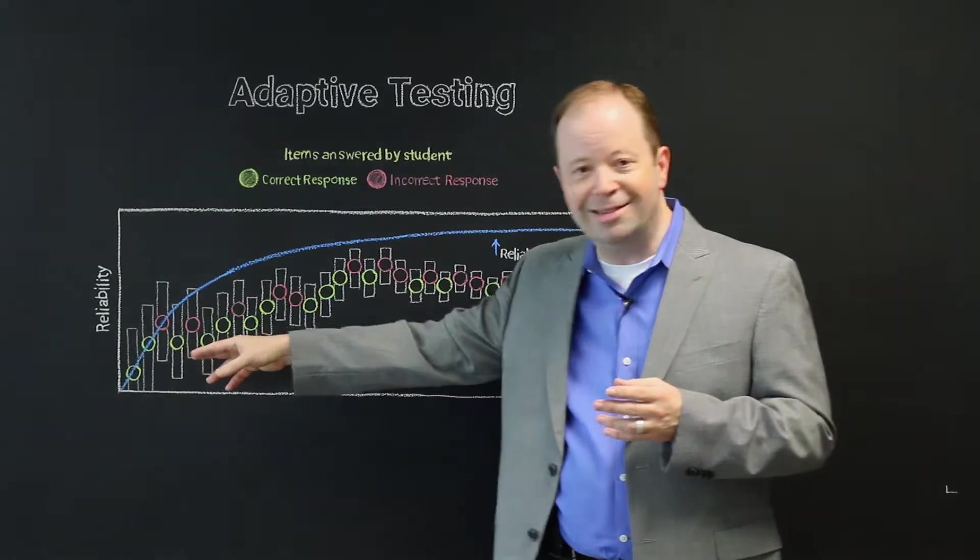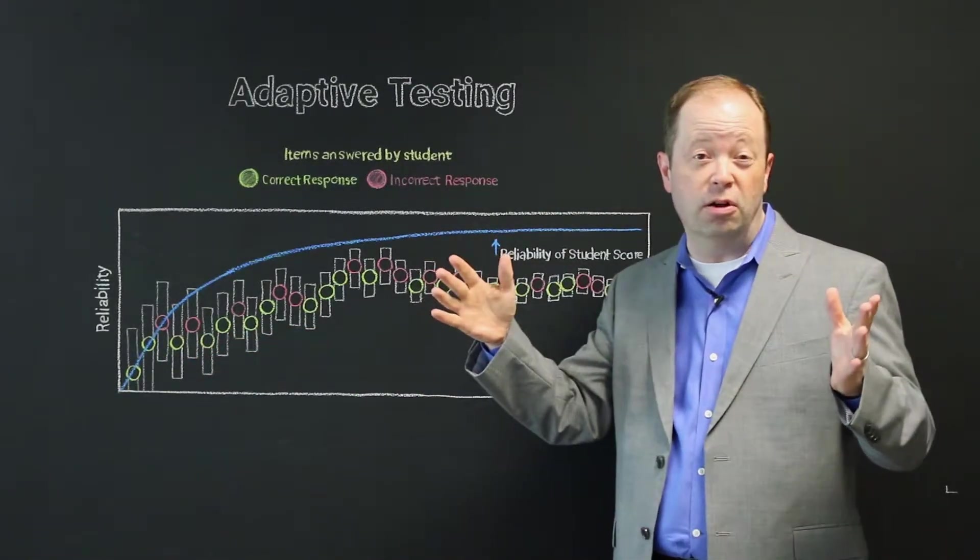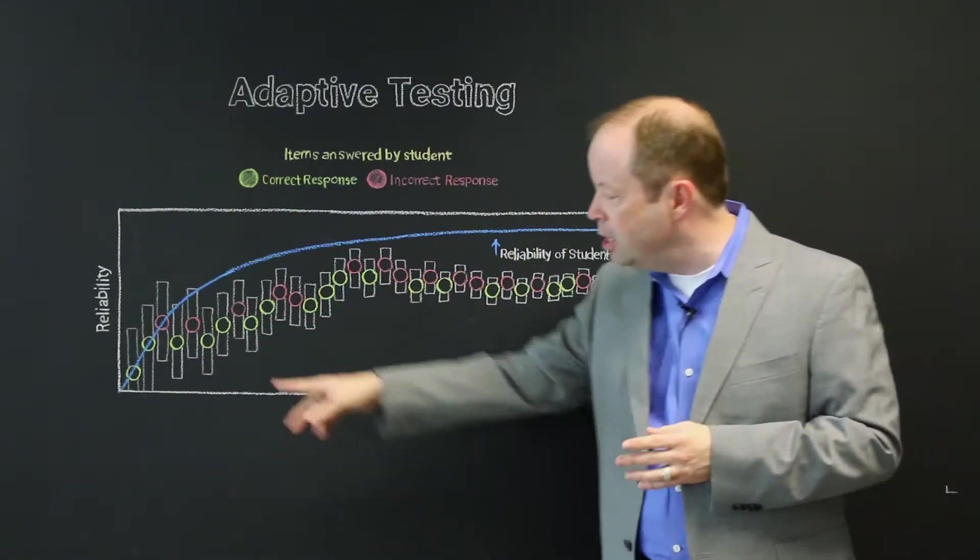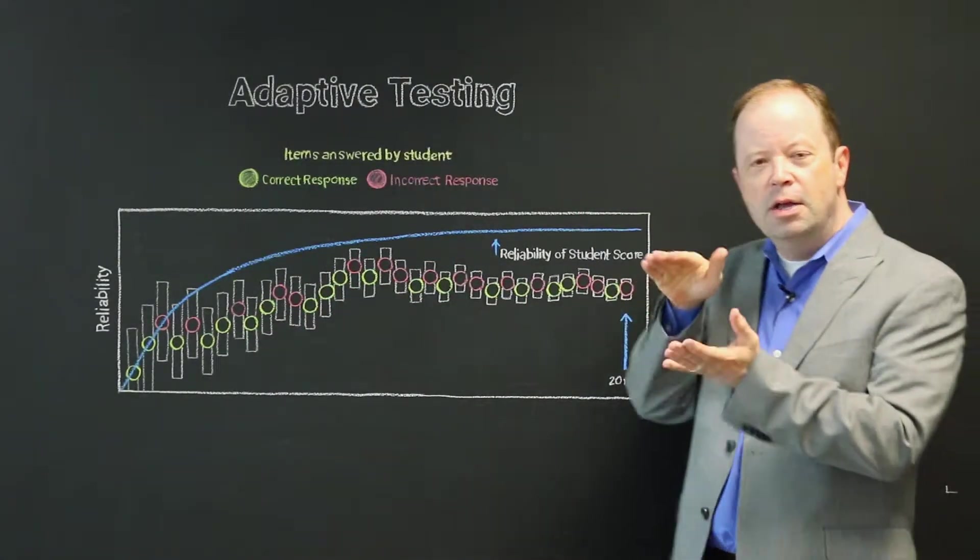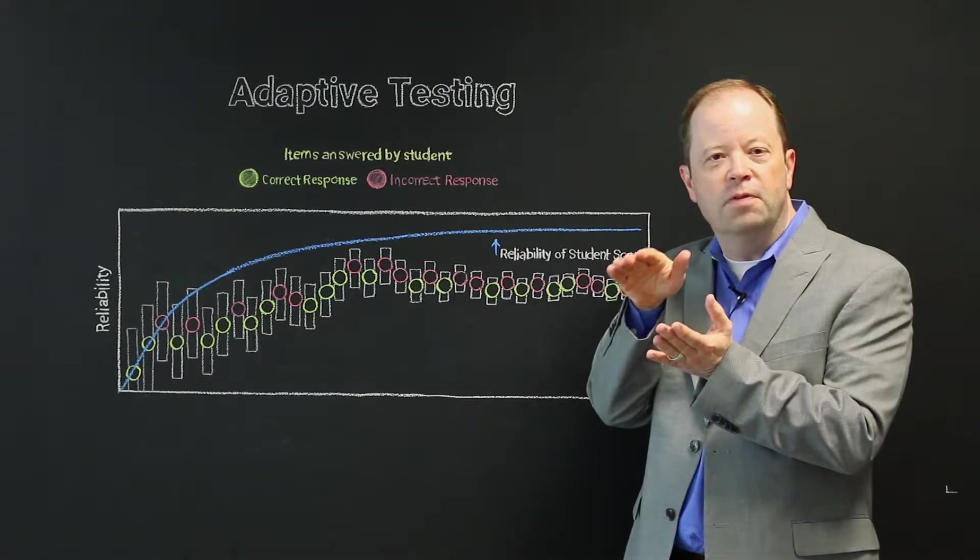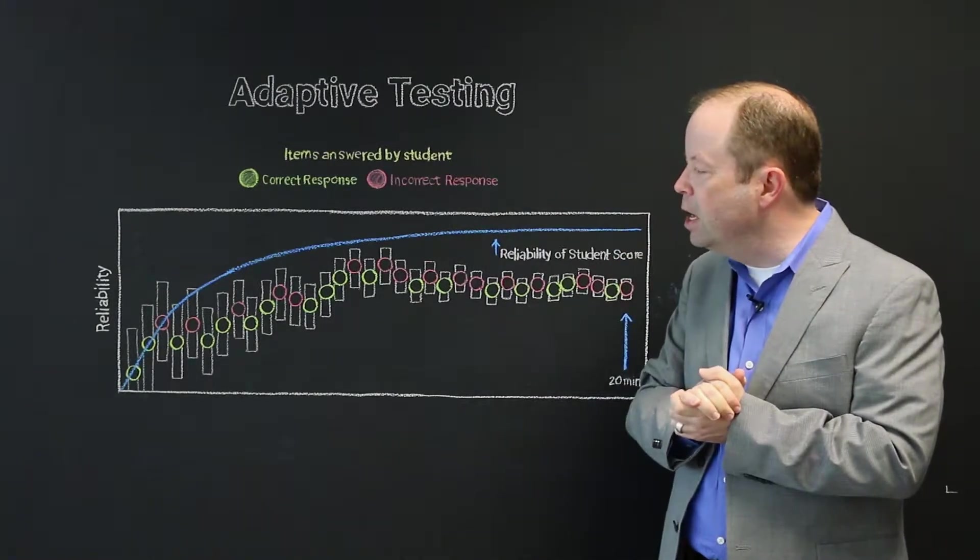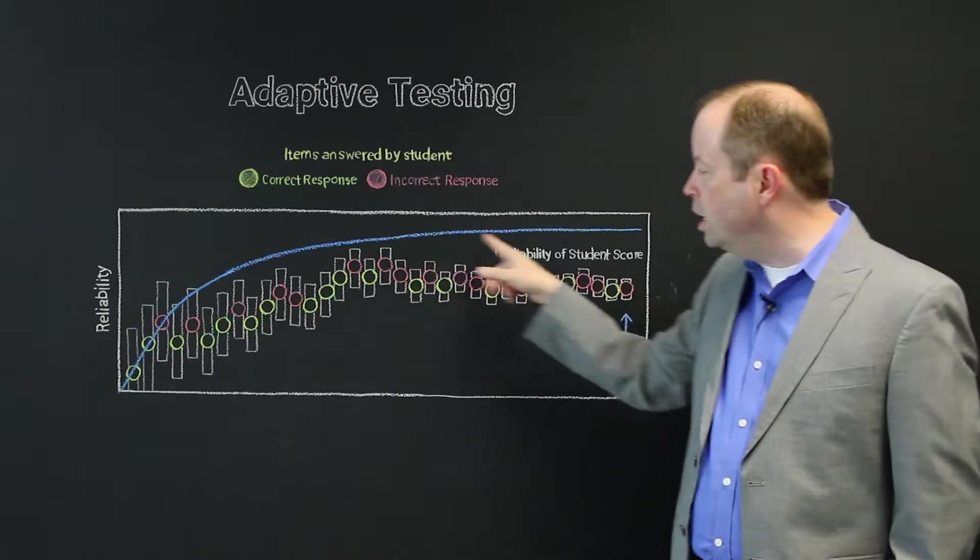Obviously, as the test starts, you present a score, but the margin of error is going to be pretty large because you haven't sampled all that much. But as the test progresses, what we find is by the time we get to the end, there's a very small or a very succinct margin of error.